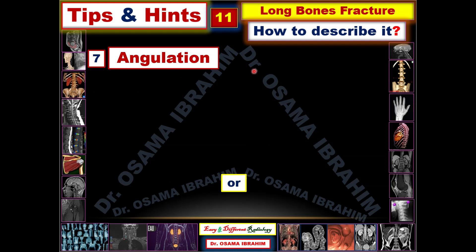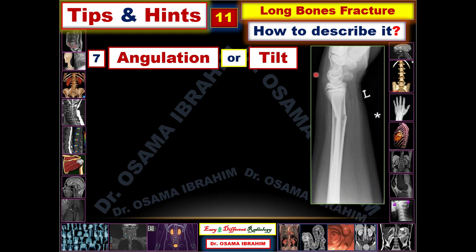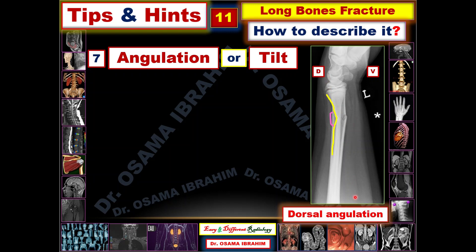Number seven is angulation, which can also be described as tilt — they have the same meaning. For example, this radius shows a fracture at the distal third, and the fracture is angulated, meaning it forms an angle. This is the dorsal aspect, and this is the volar aspect of the wrist — the scaphoid bone points to the volar aspect. The angle formed here is at the dorsal direction, so there is dorsal angulation, which can also be described as dorsal tilt.